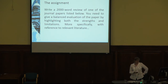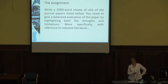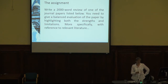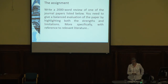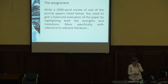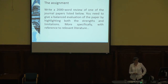The assignment asks you to write a 2,000-word review of one of the journal papers listed in the handbook. There are five journal articles — the articles themselves aren't in the handbook, but the links are. Your first task is to go and find them. Log in through the university via Ease and you should be able to get them — most have DOIs. If you can't find them that way, go to the journal homepage or use Discover Ed. You need to give a balanced evaluation by highlighting both the strengths and limitations.